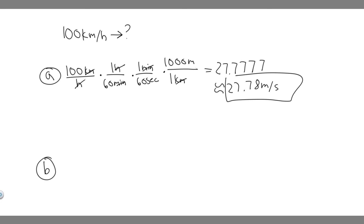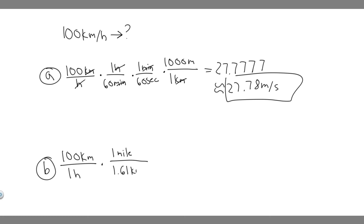Now we're going to do Part B. We're converting from 100 kilometers per hour into miles per hour. Keep in mind the hours aren't going to change — it's still going to be in hours. So all we need to do is convert from kilometers into miles. What you need to know is that one mile is equal to 1.61 kilometers. Notice the kilometers will cancel just like in the last one, and we have miles on top and hours on the bottom, which is exactly what we want.